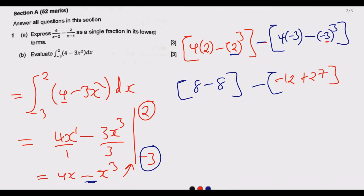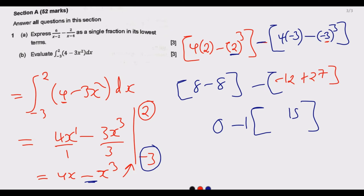The lower limit evaluates to negative 12 plus 27, which equals positive 15. So we have 0 minus 15, giving us negative 15. That is our answer. Remember, the question asks us to evaluate — just find the value — not to find the area, so a negative answer is perfectly valid here.